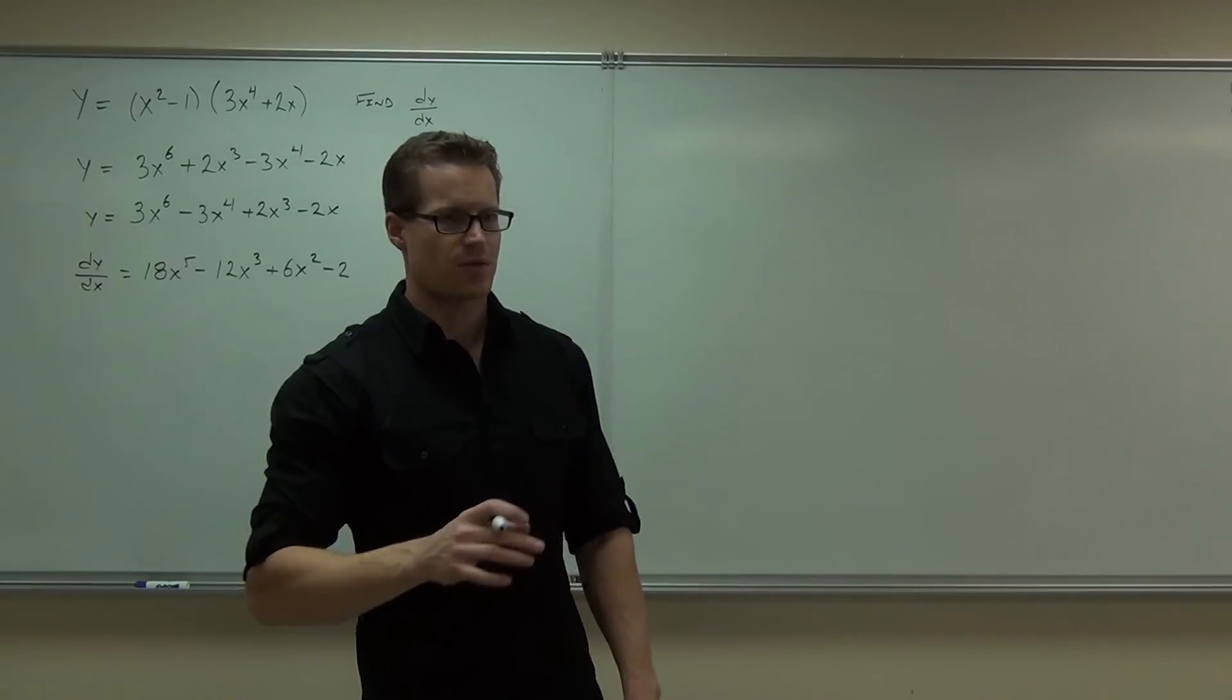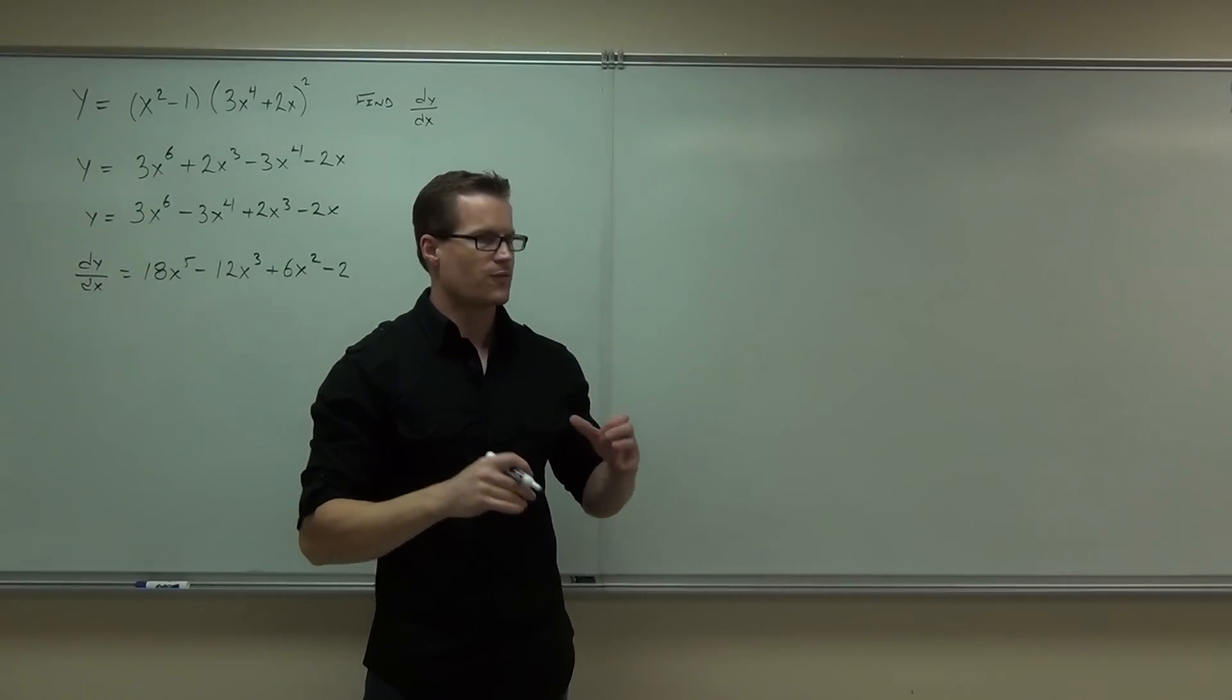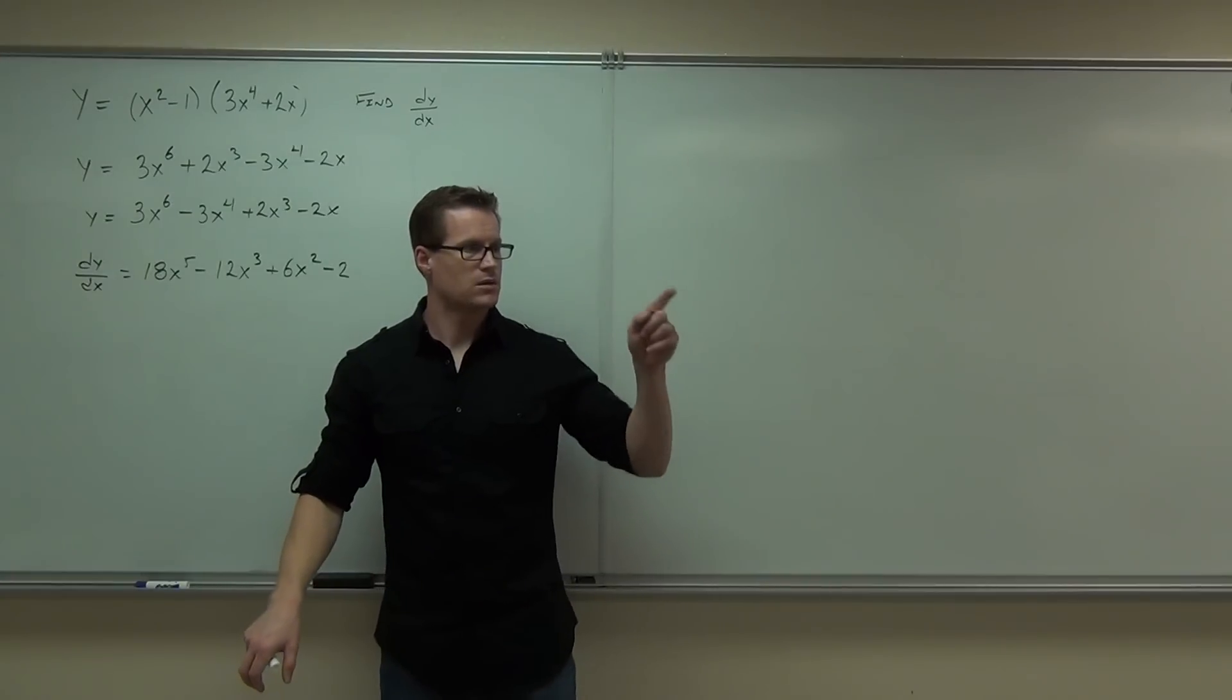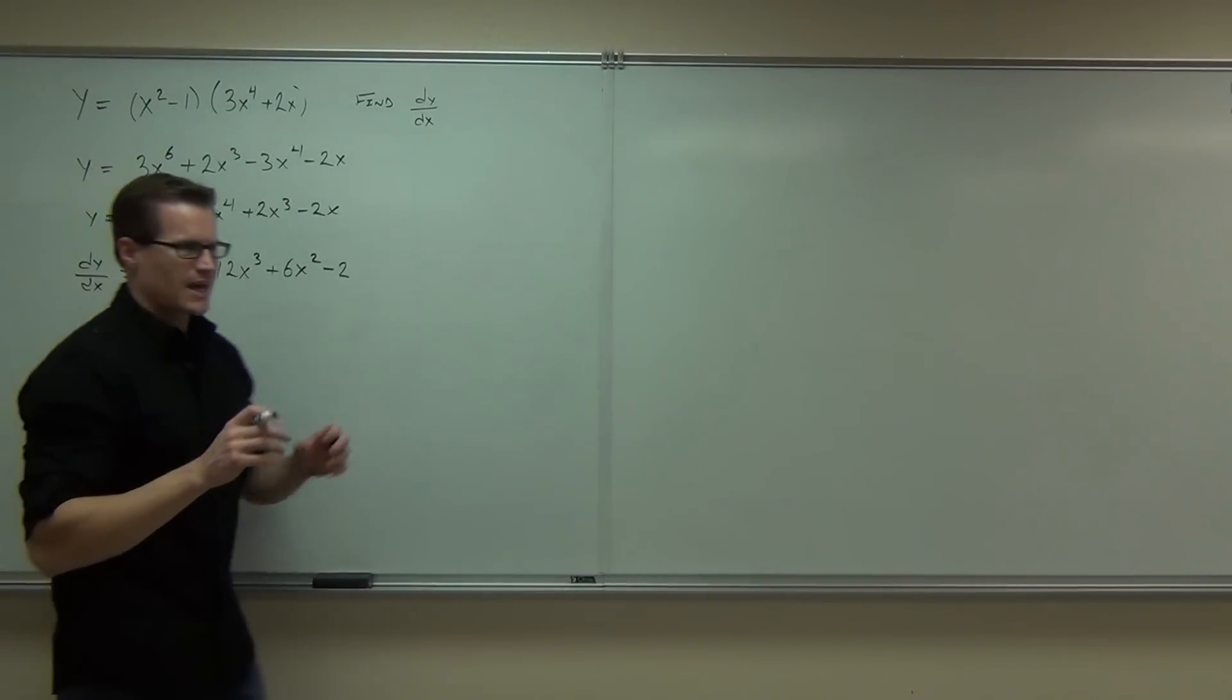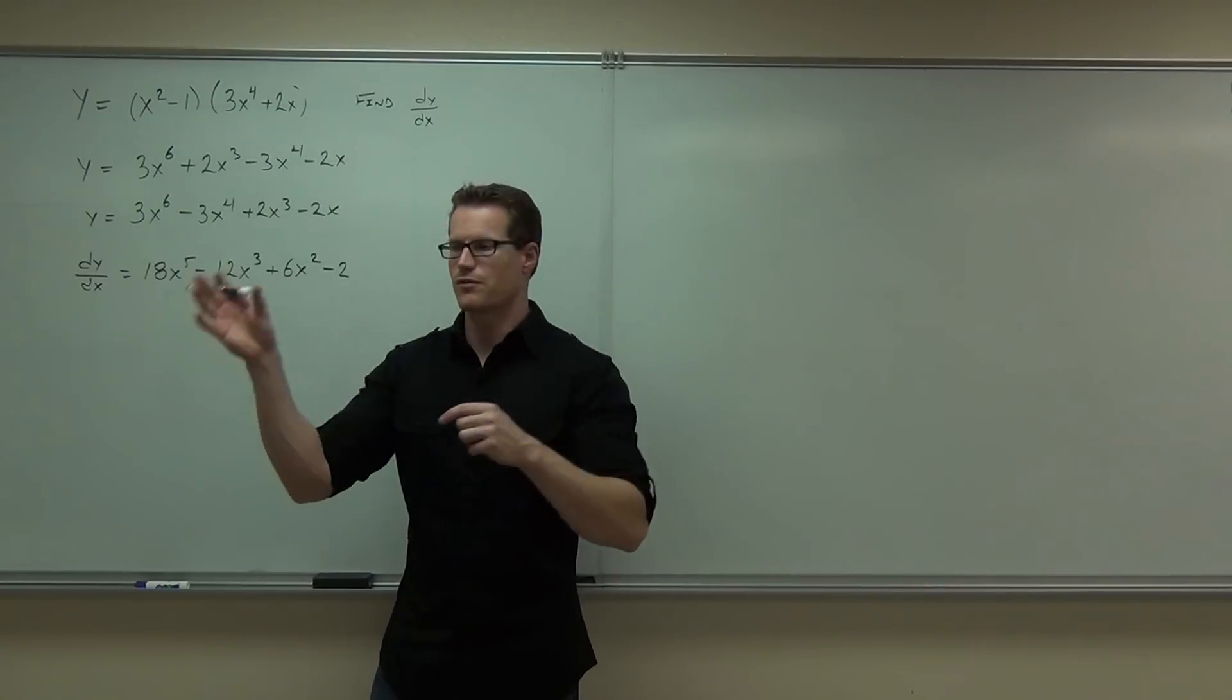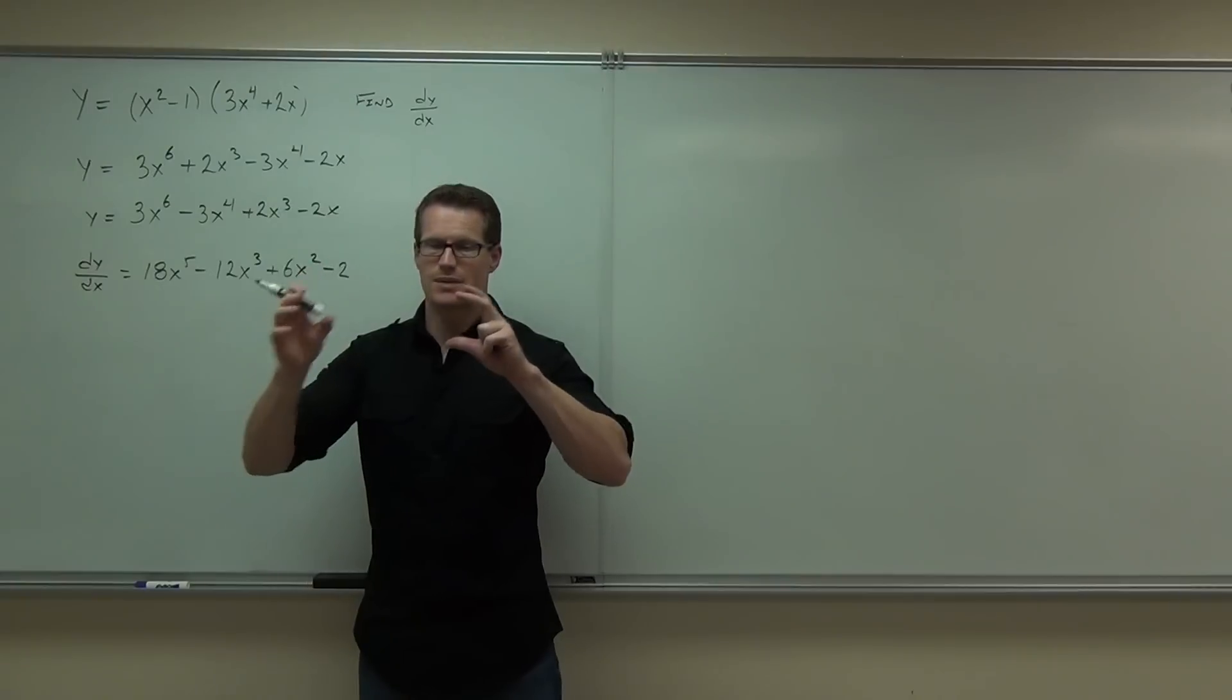Now, the product rule should give us the same thing. And again, we're practicing the product rule in case I give you something like that where you can't just distribute it. You'd have to distribute this one and then distribute. That would be very annoying. So we're going to verify with a couple of these examples that you are going to get the same thing if you use the product rule. Do you remember what the product rule said to do? Derivative of the first times the second, add the derivative of the second plus the first.